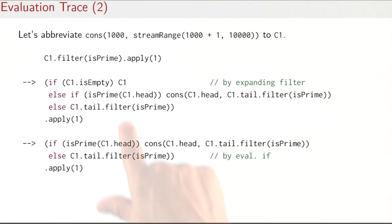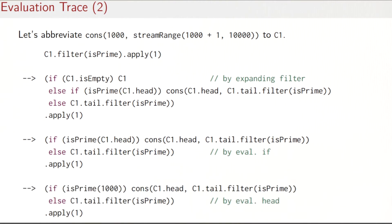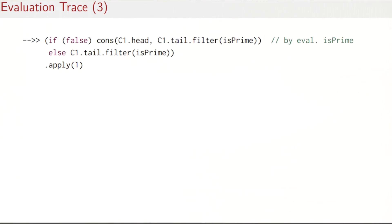The next thing to do is we need to expand the filter function. Here you see its definition, and then the rest that needs to be done is apply(1) on that. I have to evaluate the if-then-else—C1 is definitely not empty because it's a cons, so I would be left with this else part of the first if here. I have to evaluate the head of the C1 stream; that would give me 1000 because that's the first parameter passed to cons. Now the next thing to do is evaluate isPrime. I'll leave that out—we've done that already—but it's pretty clear that isPrime(1000) should return false, so I replace the call by false.